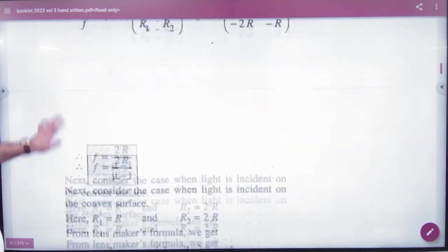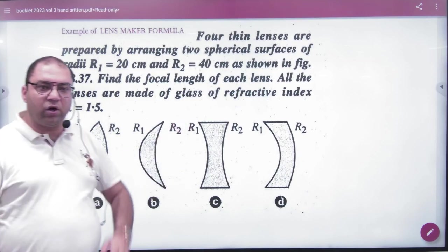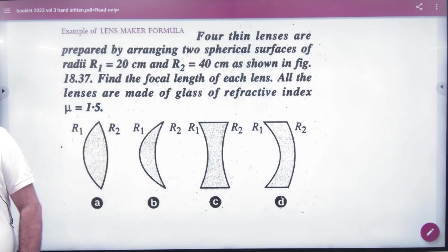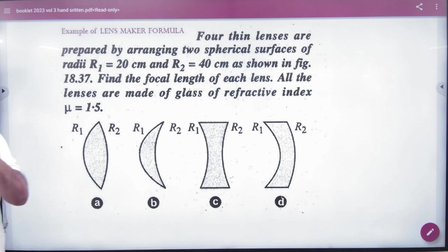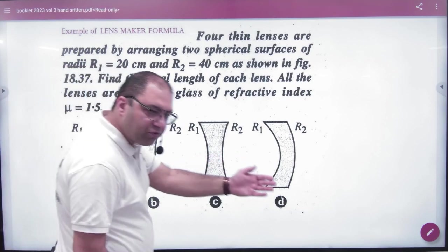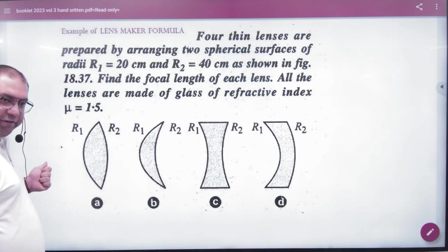Now, as you think, one question comes. You are given these 4 lenses and each will ask for the focal length. You will be given R1 and R2 values and asked what the focal length will be. When you start lens maker, the whole game of R1 and R2 has sign conventions. If you think the right direction is positive, then one R1 will be positive and the other R2 will be negative.